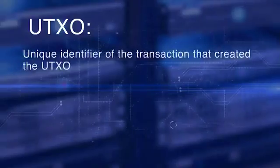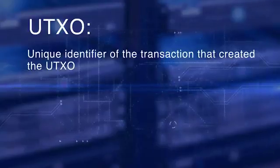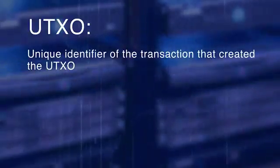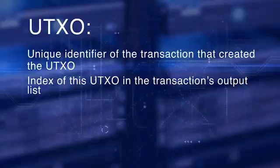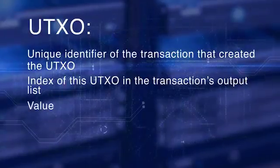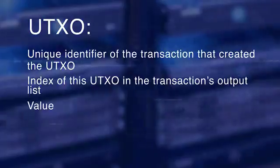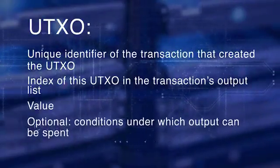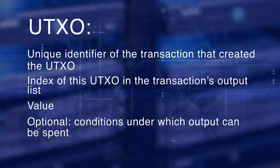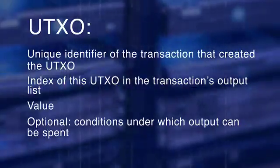A UTXO includes a unique identifier of the transaction that created it, an index or position of the UTXO in the transaction's output list, a value or the amount it is good for, and an optional script — the condition under which the output can be spent.